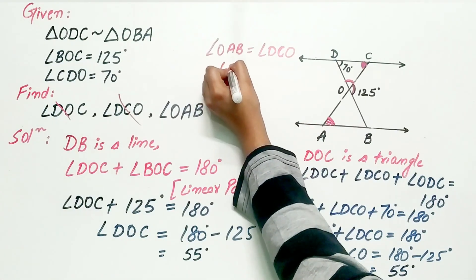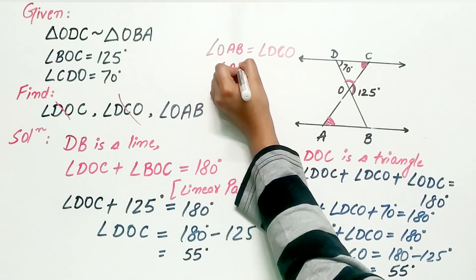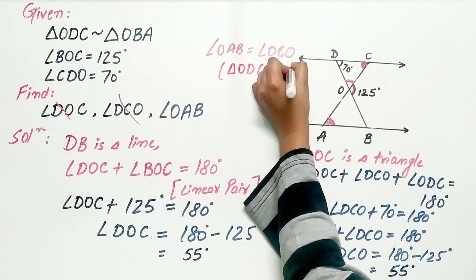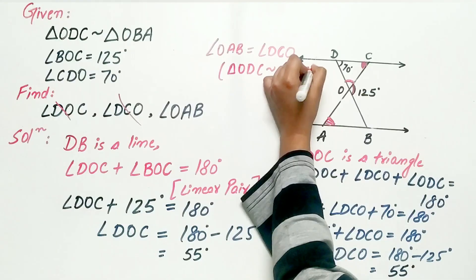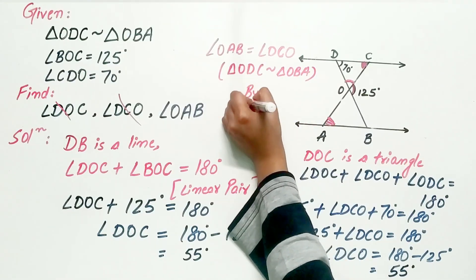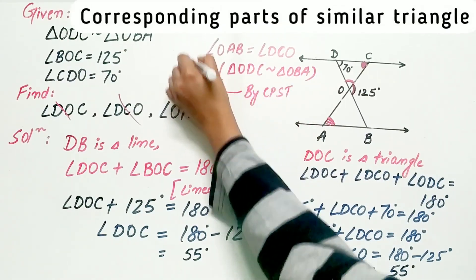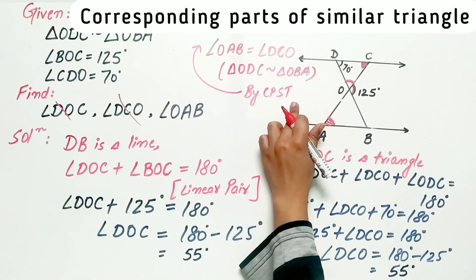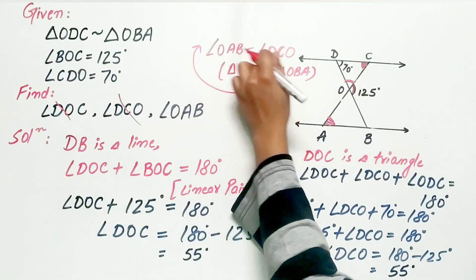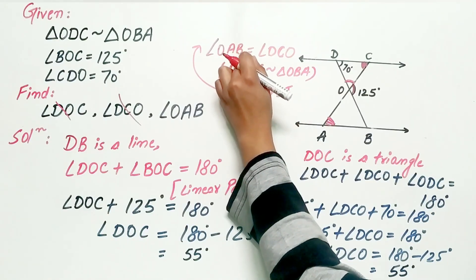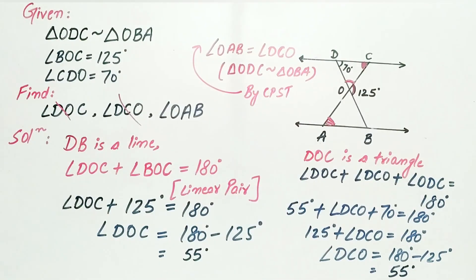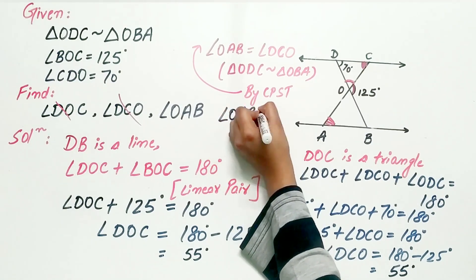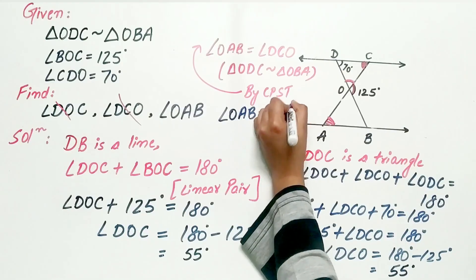Because triangle ODC is similar to triangle OBA, hence, via CPST, that is corresponding parts of similar triangles, both the angles are equal, hence, angle OAB is equal to 55 degree.